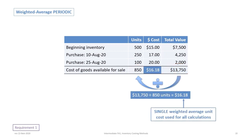Next, we develop a single weighted average unit cost. We take the sum of all costs from the purchases and divide by the number of units available. $13,750 in total cost divided by 850 units gives us a weighted average cost for the period of $16.18.